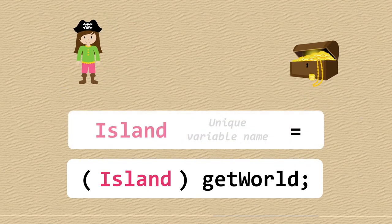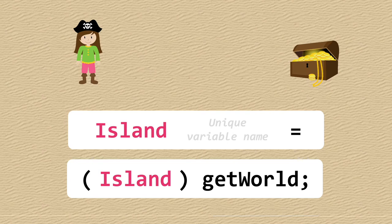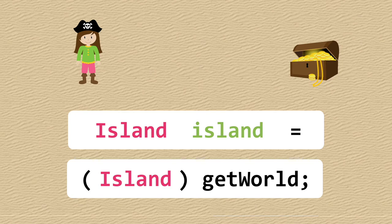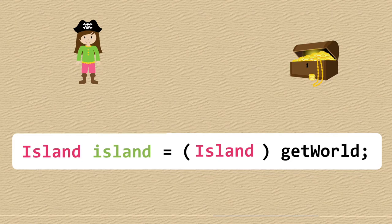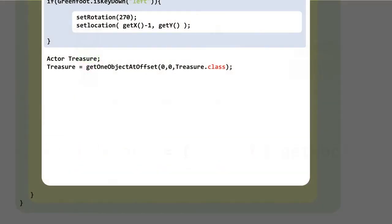We need to actually store that as a variable, and we need the world class name again plus a unique name for the world we can use to refer to it in our code. It doesn't matter much what this is, but it's worthwhile giving it a descriptive name. The style the exam board uses is just the world class name entirely in lowercase — confusing, certainly, but it's just a variable name. Let's combine that into one line and get it into our code.